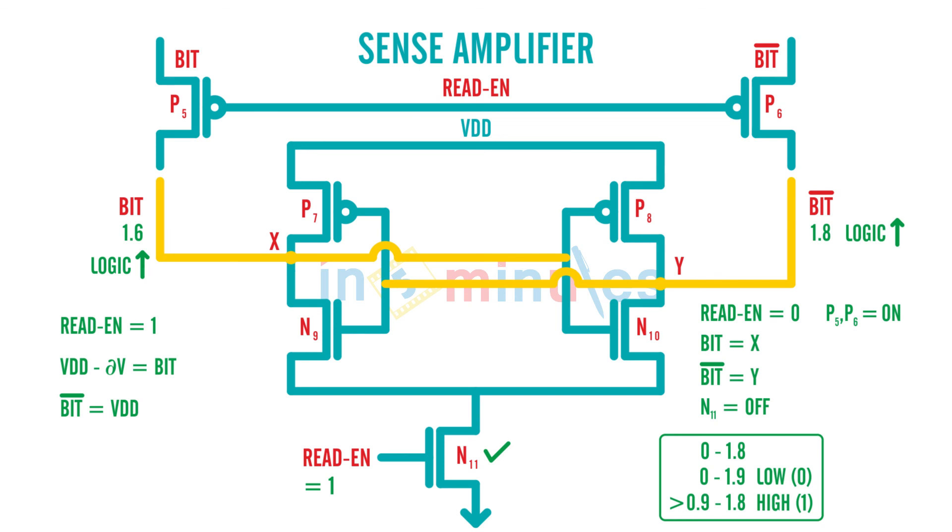So X is at logic 1, Y is at logic 1. X is going to the input of P8 and N10. Y is going as the input to P7 and N9. And what both of these are going to do is they are going to turn on N9 and N10.